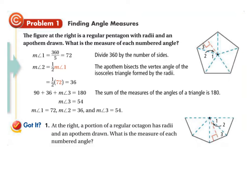Here's a practice problem. A portion of a regular octagon has radii and an apothem drawn. What is the measure of each numbered angle? You're going to have to consider the fact that it's an octagon to figure out what angle one is, and then use that information to find the rest of the angles. Pause your video now and unpause it when you have your answers.